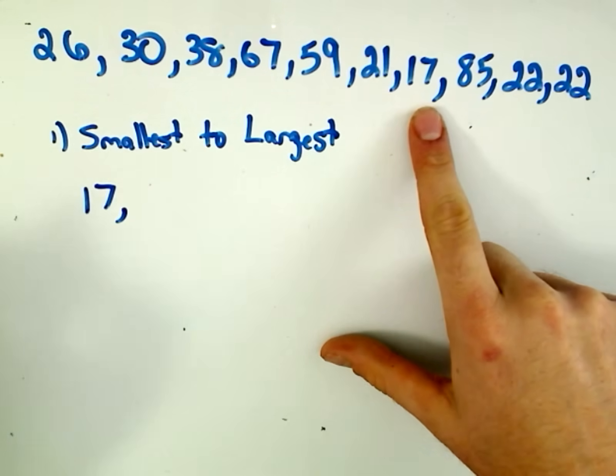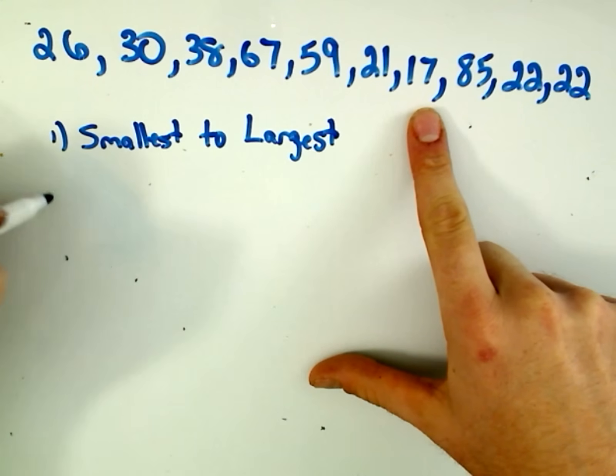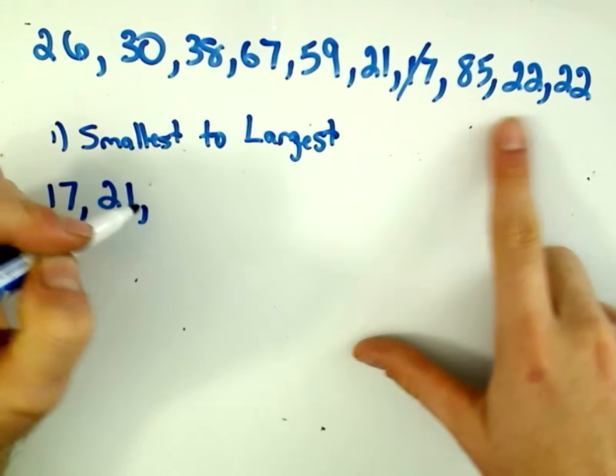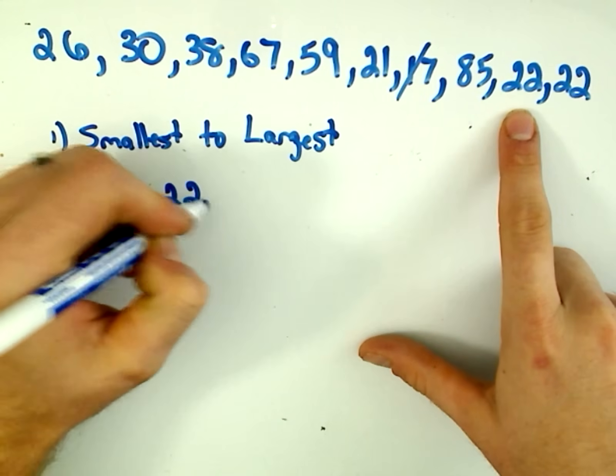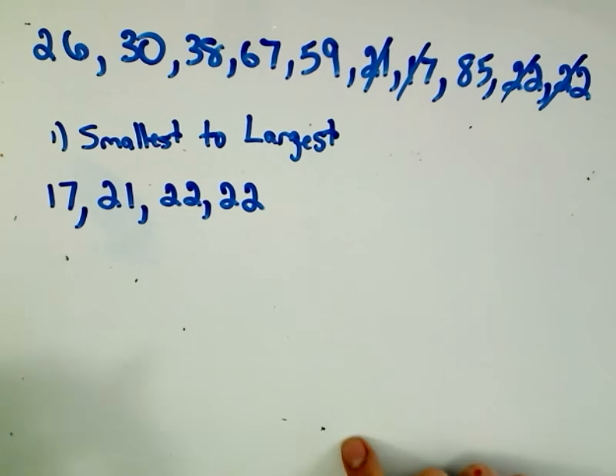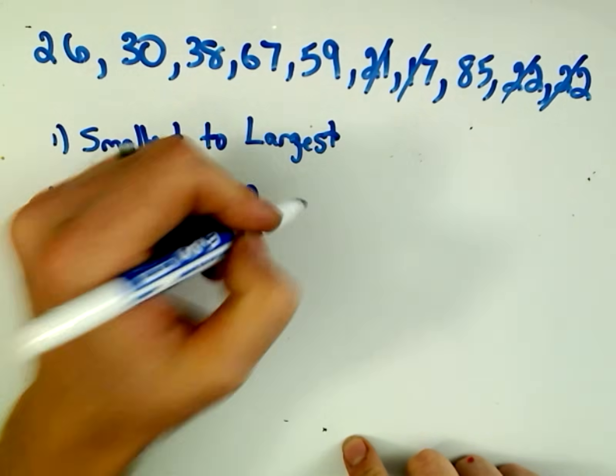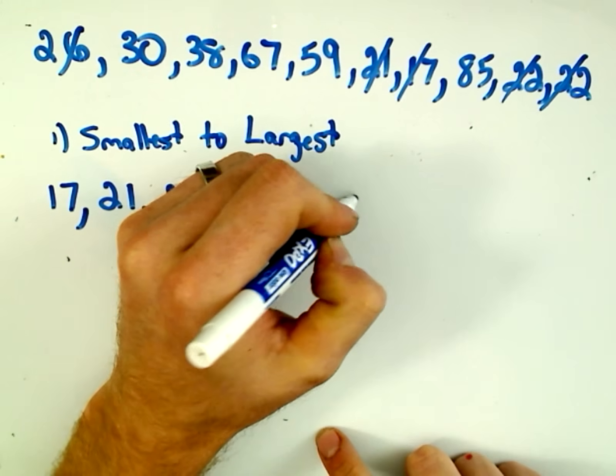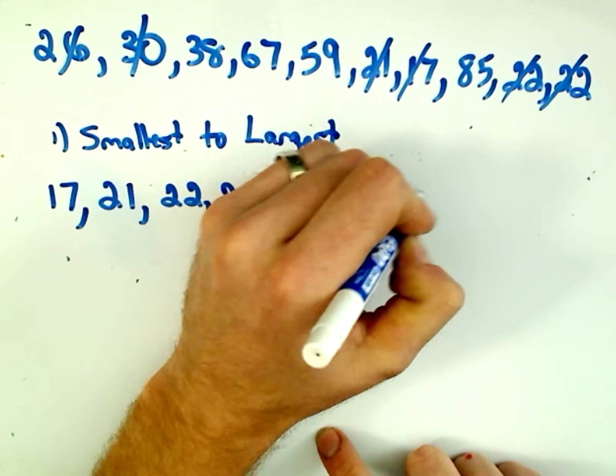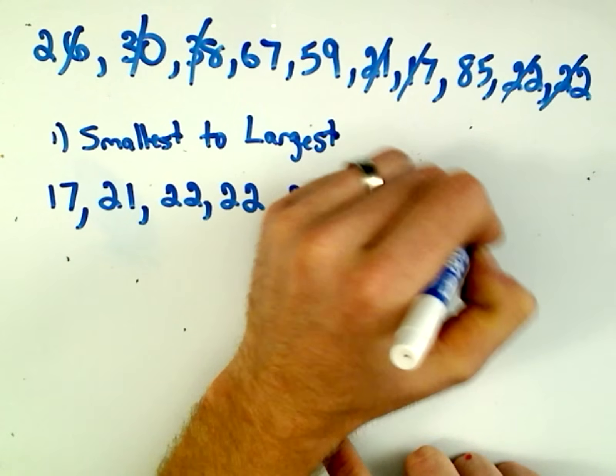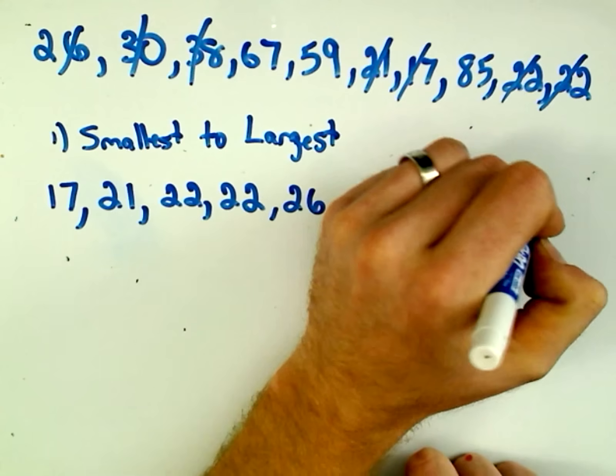So we've got 17, that'll be our smallest number. Let me squeeze it over here just to make sure. So we've got 17, takes care of you. Looks like we have 21 next, followed by two 22's. So 21, 22, 22. It looks like the next smallest value would be 26, then 30, then 38, then we've got 59, 67, and 85.